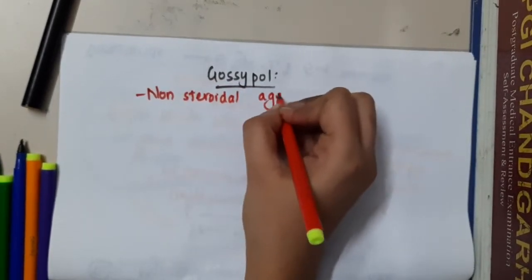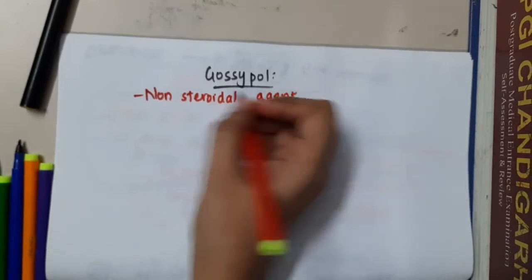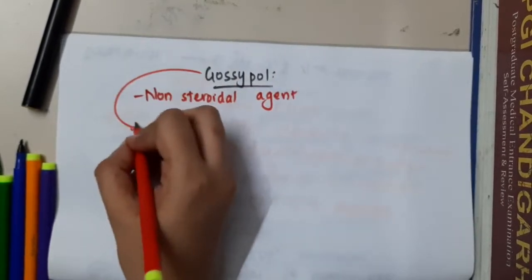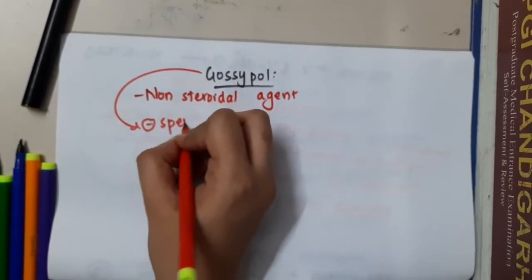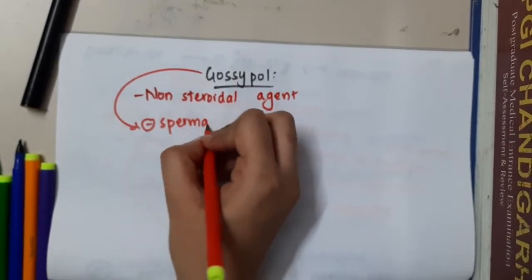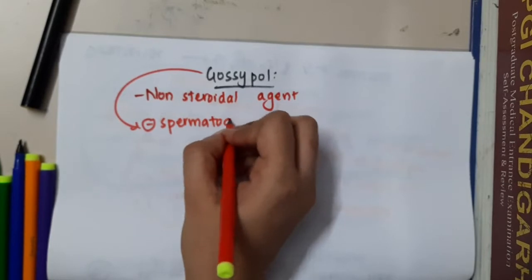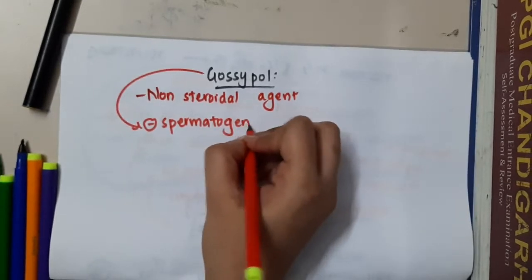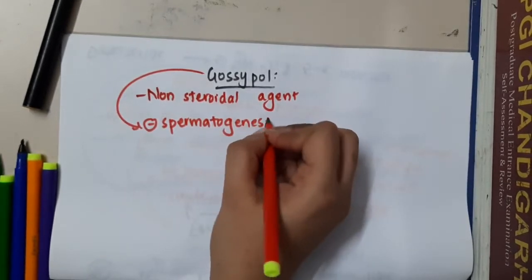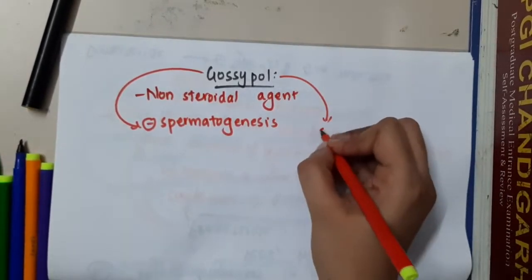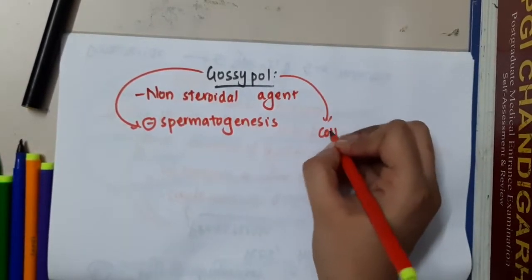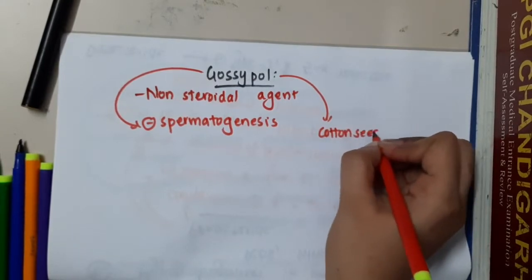What does Gossypol do? It will inhibit spermatogenesis. Where do you get Gossypol? It is obtained from cotton seed.